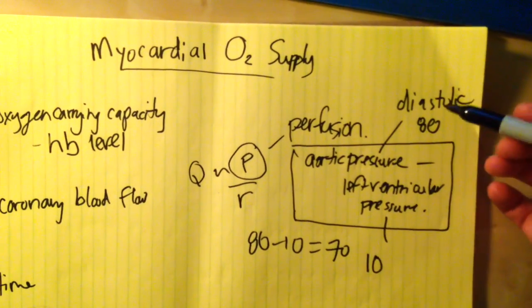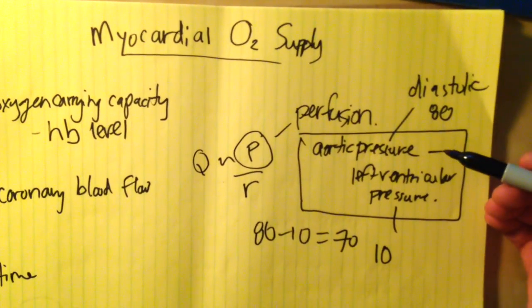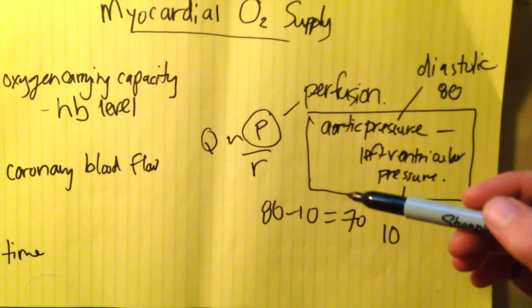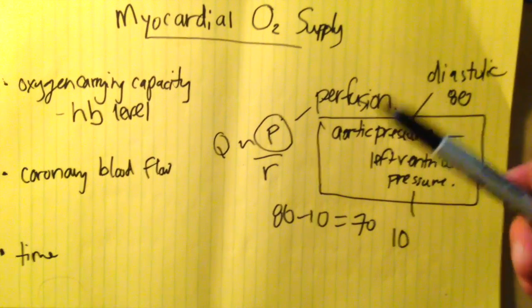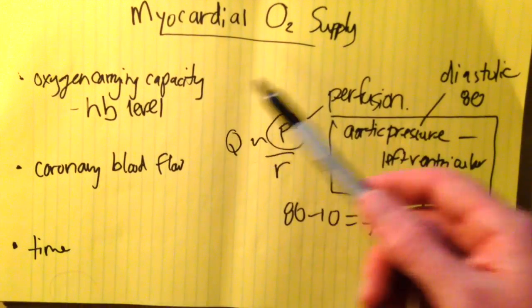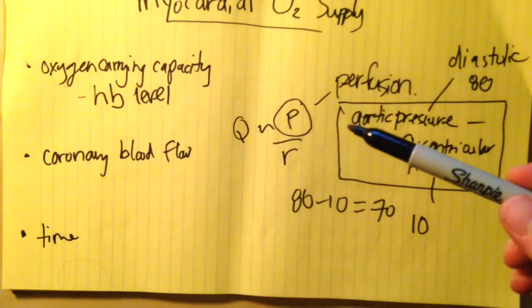So if we drop our diastolic pressure, we're going to decrease the perfusion pressure of our coronary arteries and thus potentially decrease our myocardial oxygen supply, upsetting the balance between oxygen supply and demand within the myocardium.